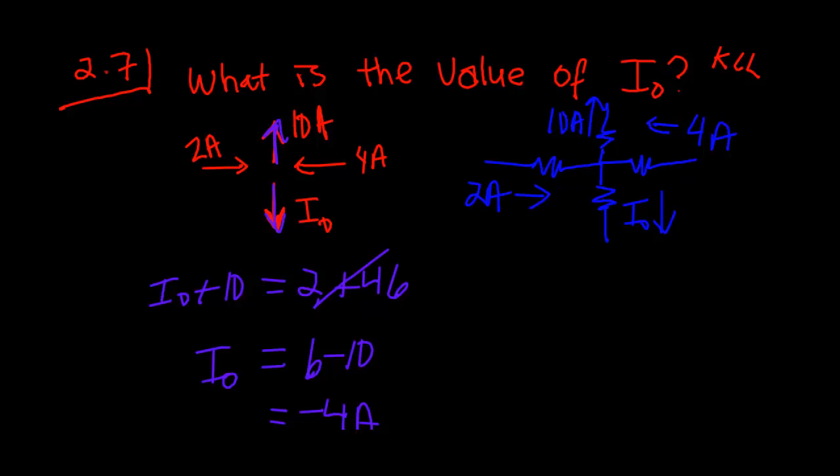So basically minus 4 amps doesn't make any sense at all. Basically arbitrarily choosing which way the current flows. If you get a minus sign, it actually means it's flowing the other way. So in reality, the minus 4 amps isn't flowing down. You have 4 amps of current flowing up. So that is wrong.